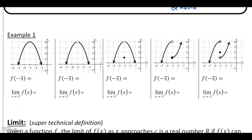Let's look at example one to get an idea of what we're talking about with this limit idea. Looking at this graph all the way on the far left, the question we've seen in the past is something like f of negative three. We know that means to look to this x value of negative three and think about what the output is — what y value goes with it. In this example, that would be the number four.